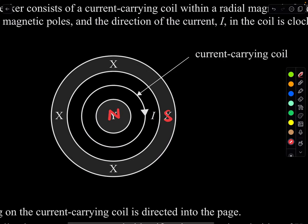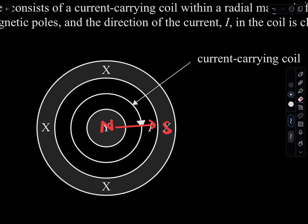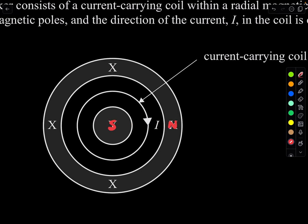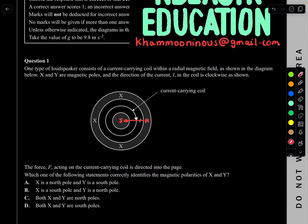What we can do is just guess — start off saying that Y is North and X is South, and use your right-hand slap rule to see if the force is directed into the page. If the field goes to the right and fingers go downward with current, the palm comes out of the page, which is wrong. We want into the page, so it must be the opposite. Hence, this should be South and this North. Try it now: fingers to the left, thumb down — palm should be into the page. Yes, it is into the page.